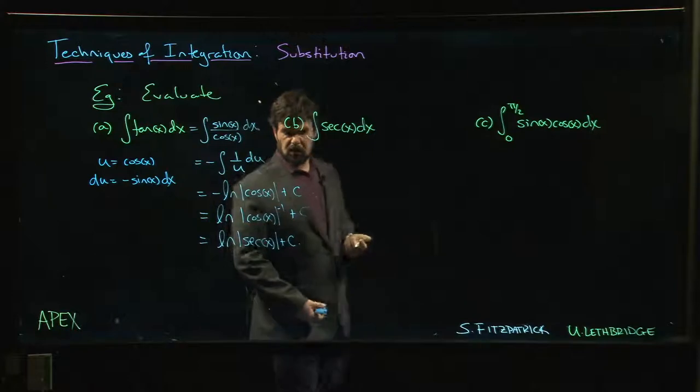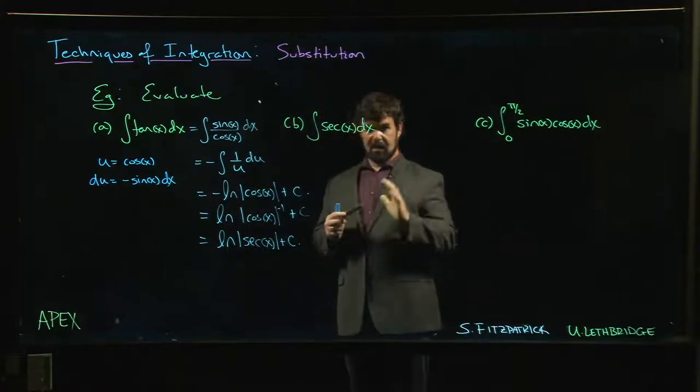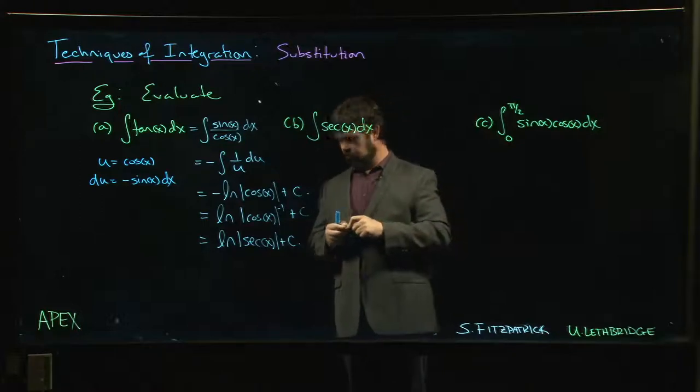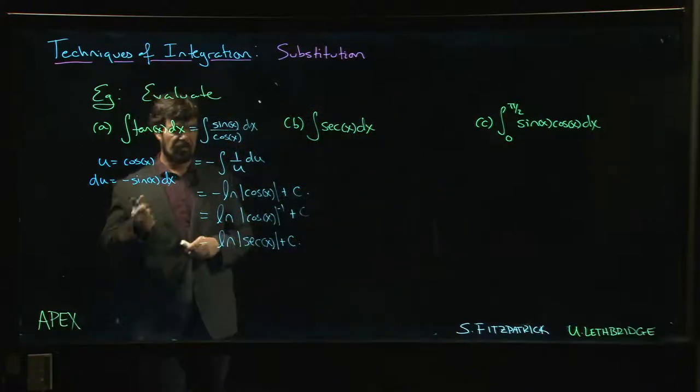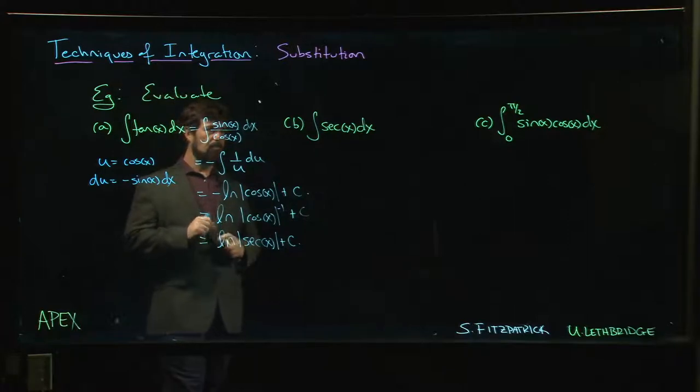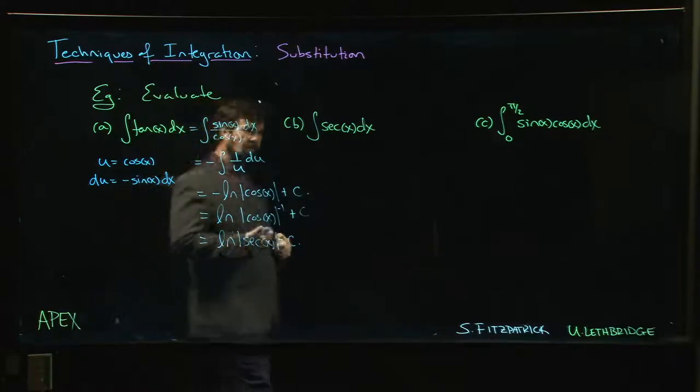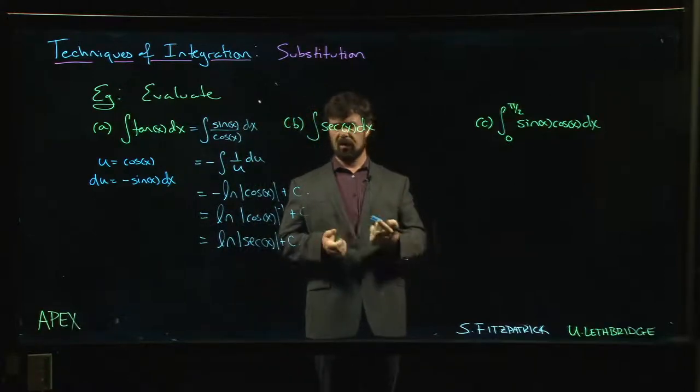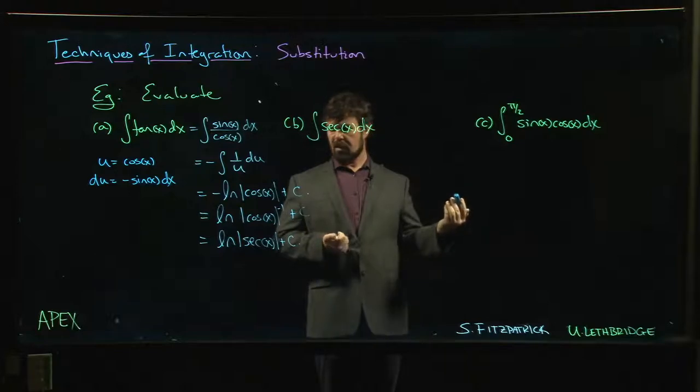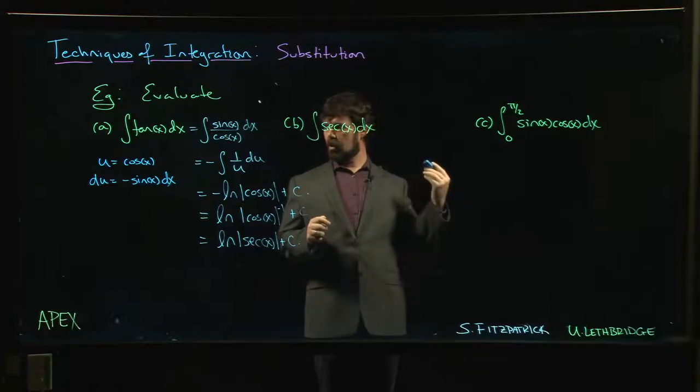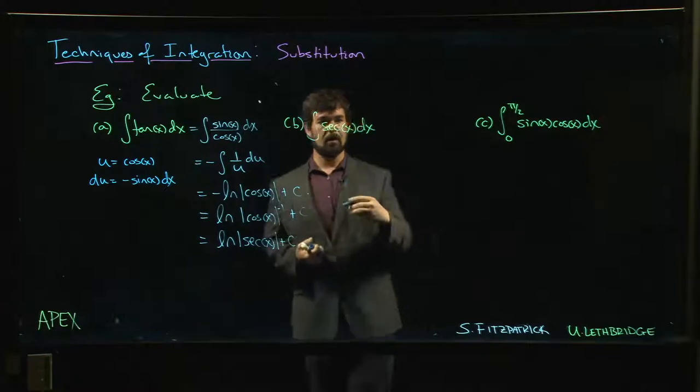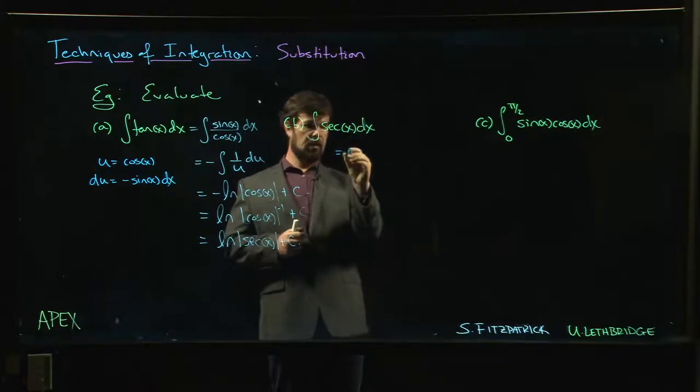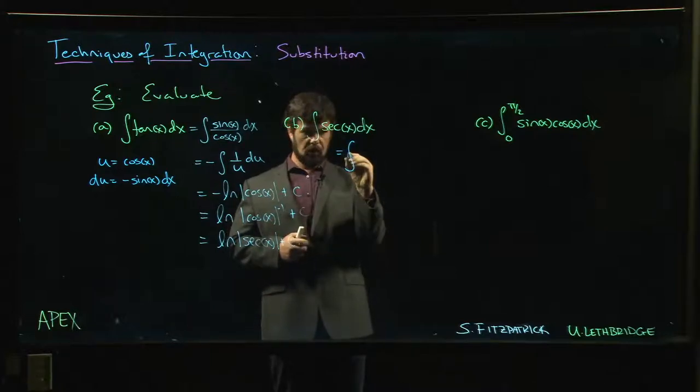How about secant? Secant turns out to be tricky. Remember what the derivative of secant is: secant is secant times tan. How do we do an antiderivative? This turns out to be one that people didn't really know the answer to for a while. It sat around for a while, eventually was figured out. I'm not sure who came up with the answer, but I'm pretty sure that whoever it was, they got to go around feeling pretty damn clever for a while because here's what you do...